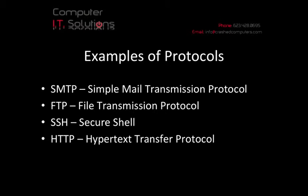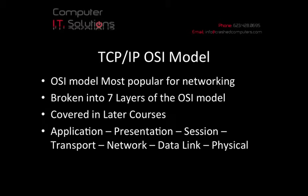All these protocols — this is just a basic outline of them, and we can go into more depth as we progress through the courses. TCP/IP has two different models that are standard. One is the OSI model, which is very popular for networking and broken into seven different layers: the application layer, presentation layer, session layer, transport layer, network layer, data link layer, and the physical layer. We will be covering all of these in later courses.